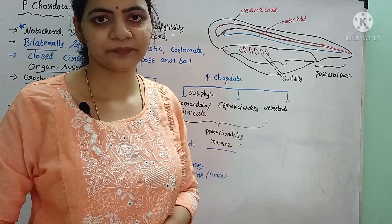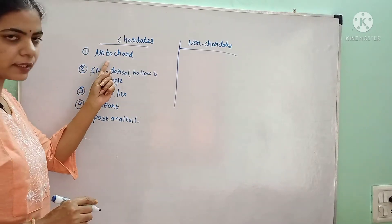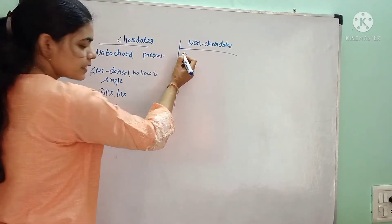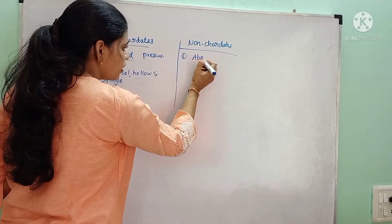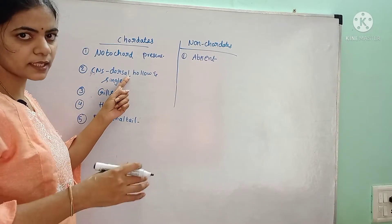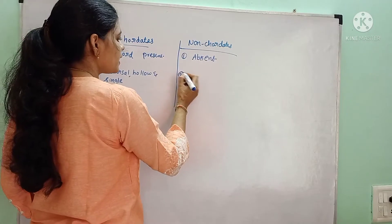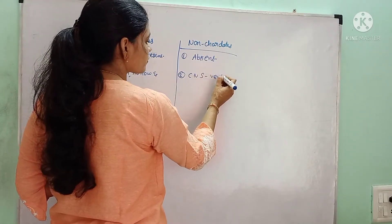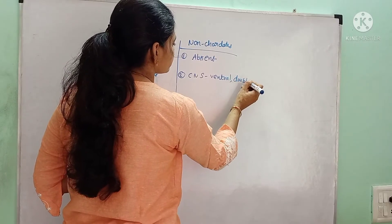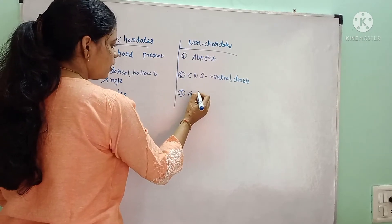Comparing chordates and non-chordates: In chordates, the notochord is present, whereas in non-chordates, the notochord is absent. The central nervous system in chordates is present on the dorsal side — it is hollow and single. Whereas in non-chordates, the central nervous system is ventral and double. Chordates have gill slits, whereas in non-chordates gill slits are absent.